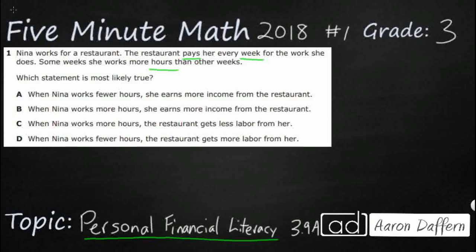So we just need one of these statements — A, B, C, or D — that is going to be true. The other three are going to be false. What we need to do is take a look at these two terms and make sure we understand labor and income and how they are related.